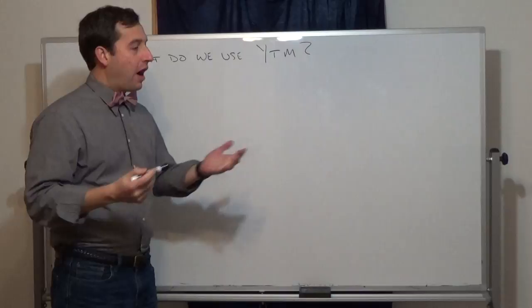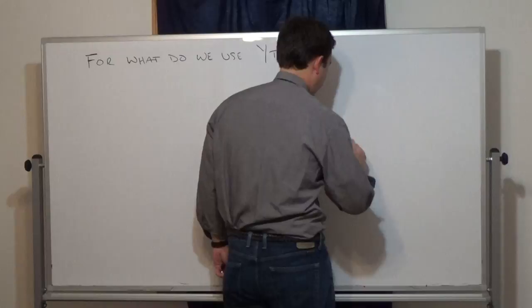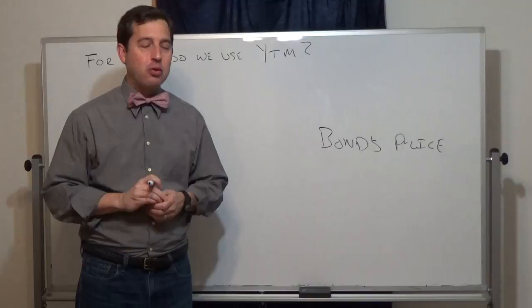This is a quick note on why we use yield to maturity so often. When I ask students what yield to maturity is useful for, they say we use it to get the bond's price. The problem with that idea is: how do you get the yield to maturity in the first place?